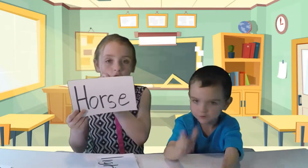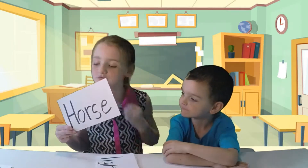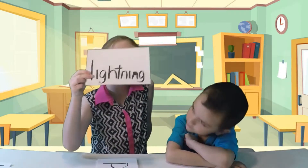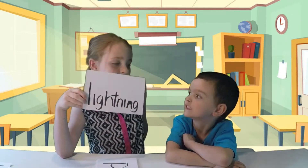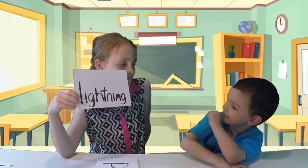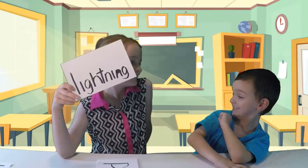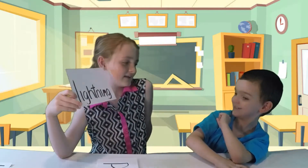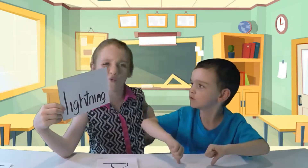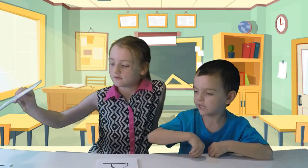A horse is a living thing because it's an animal and it's alive. What about lightning? Is lightning living? No, lightning isn't living. Let's keep on looking for them.